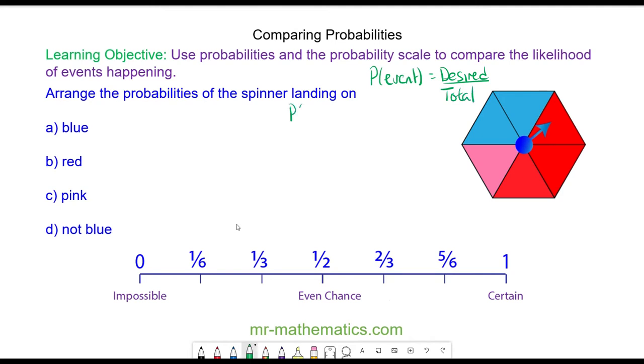So the probability of landing on a blue, there are two blue sections out of six sections in total. You can divide both the numerator and denominator by two to simplify the fraction, so we have one third. So the likelihood of getting a blue can be placed here on the probability scale.